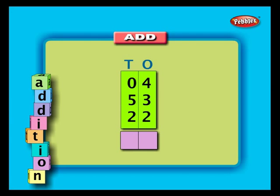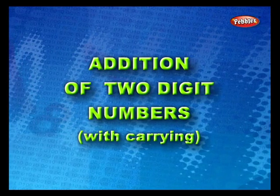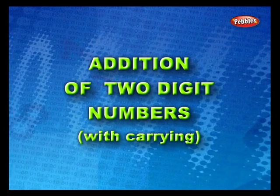Therefore, 24 plus 10 plus 13 is equal to 47. Example two: add the numbers 4, 53, and 22. Arrange them in columns. First, add the ones column — four plus three plus two is nine. Write nine below the ones column. Now add the tens column — zero plus five plus two is seven. Write seven below the tens column. Therefore, 4 plus 53 plus 22 is equal to 79.